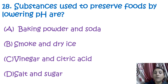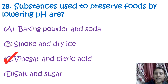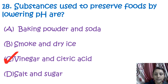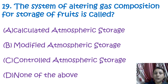The next question is: substances used to preserve food by lowering the pH are known as vinegar and citric acid. Vinegar and citric acid generally have low pH and are also used for lowering the pH of other food substances.